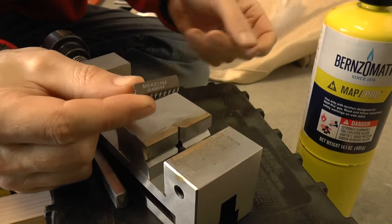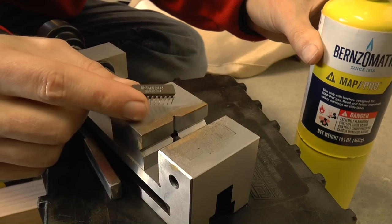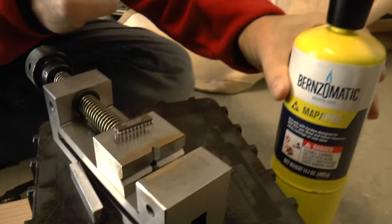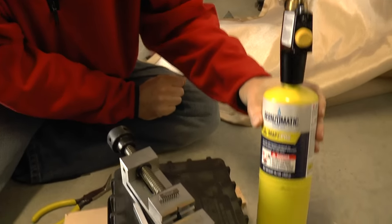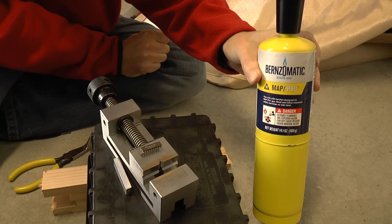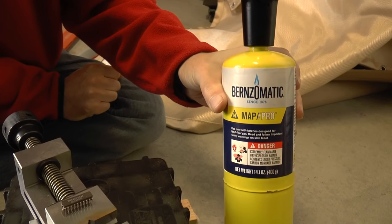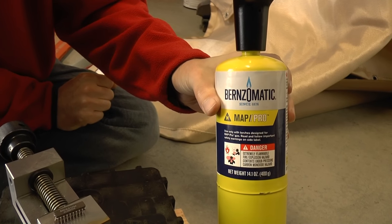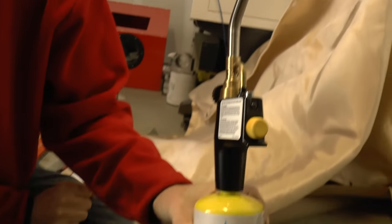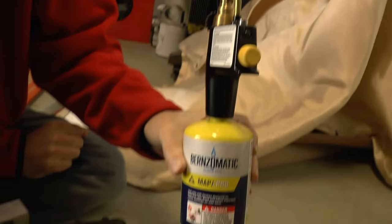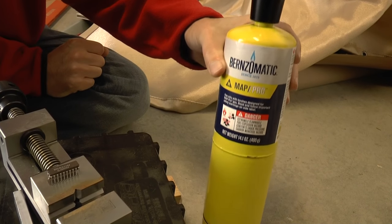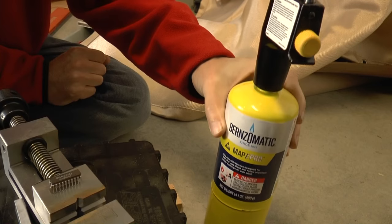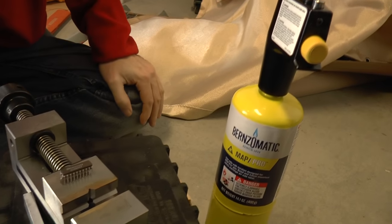So I have a Bernzomatic torch. This takes MAP gas. MAP is methyl acetylene propodyene. It's a gas that reaches about 2,000 degrees centigrade in air. You can just buy this at any Home Depot or Lowe's.